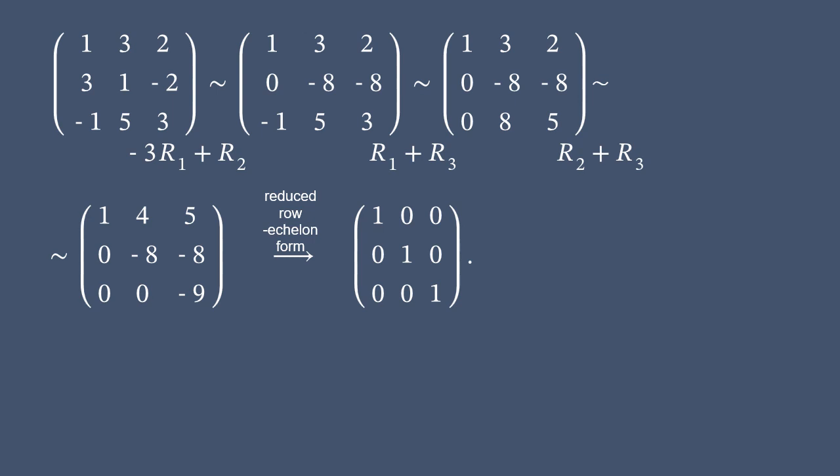We take the given matrix B, and after a series of elementary operations, we get the reduced row echelon form.